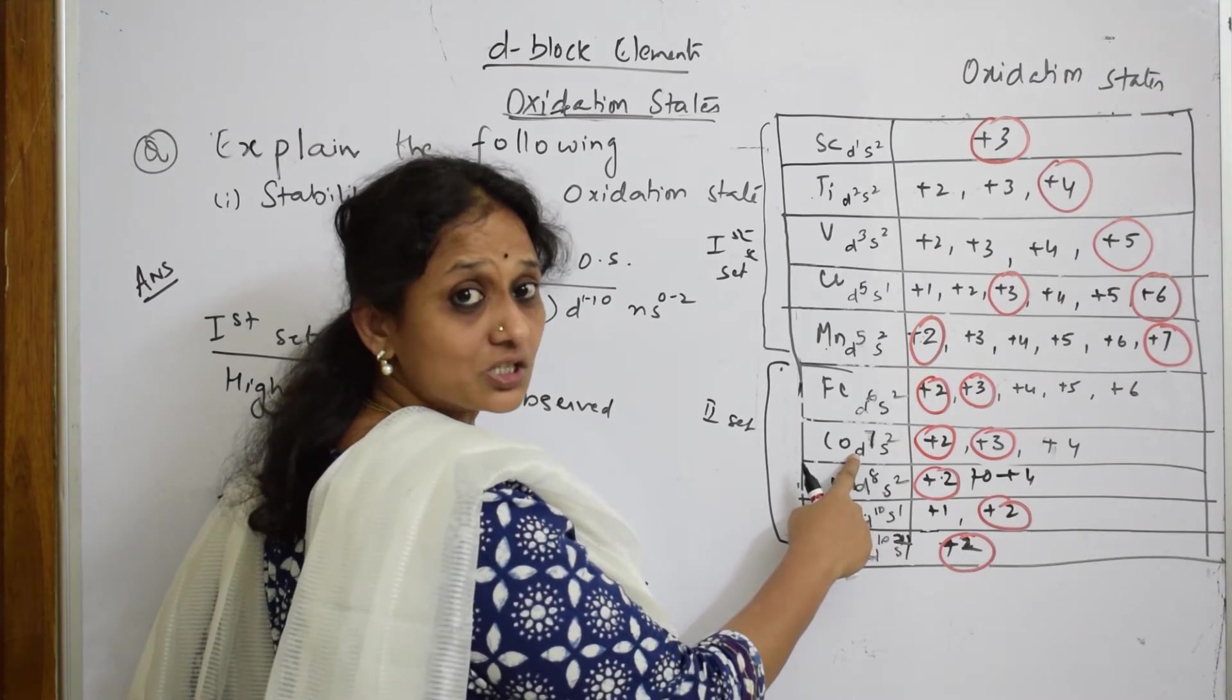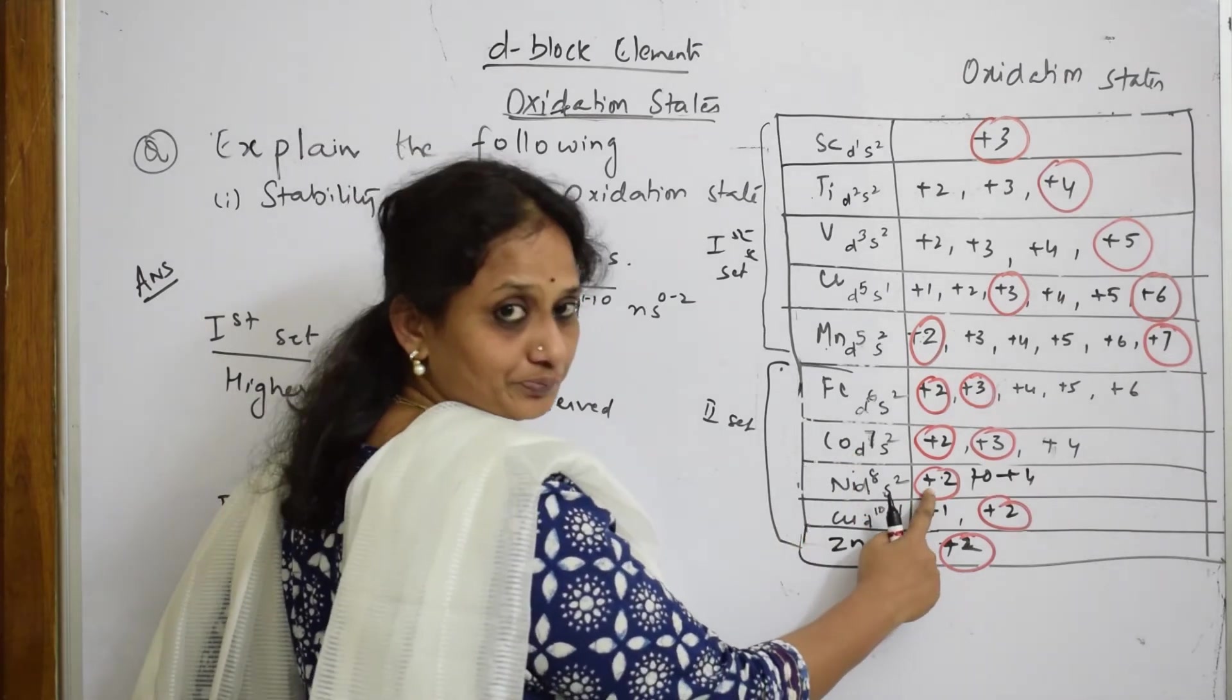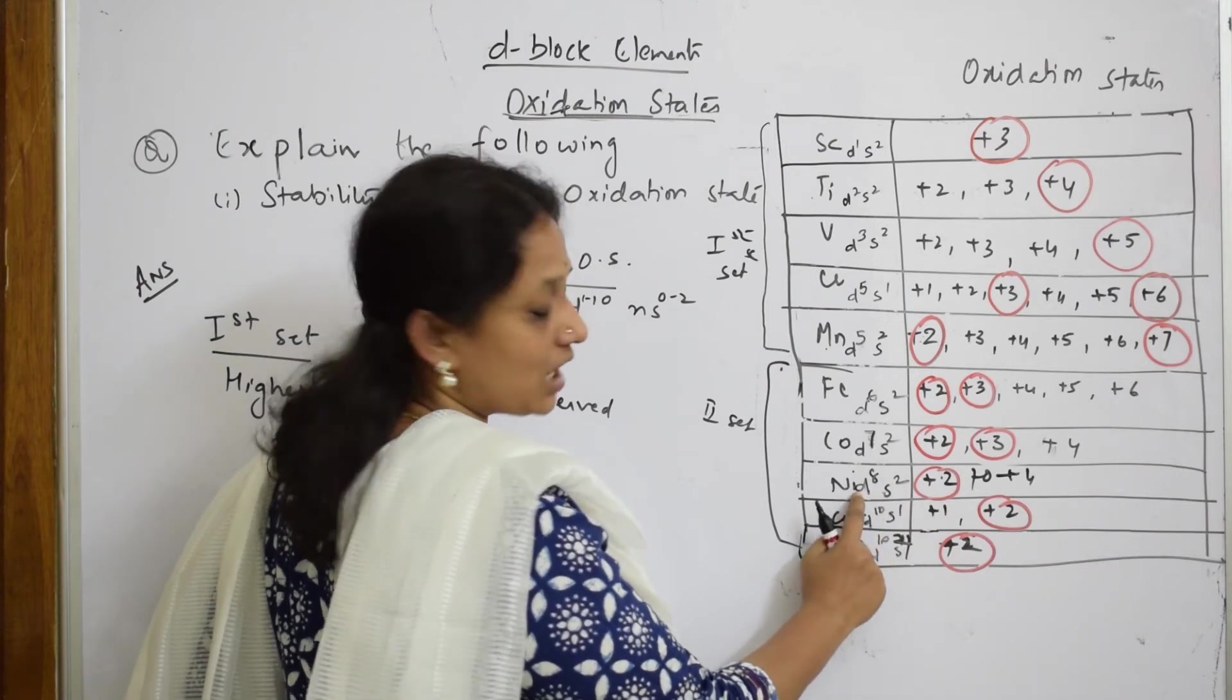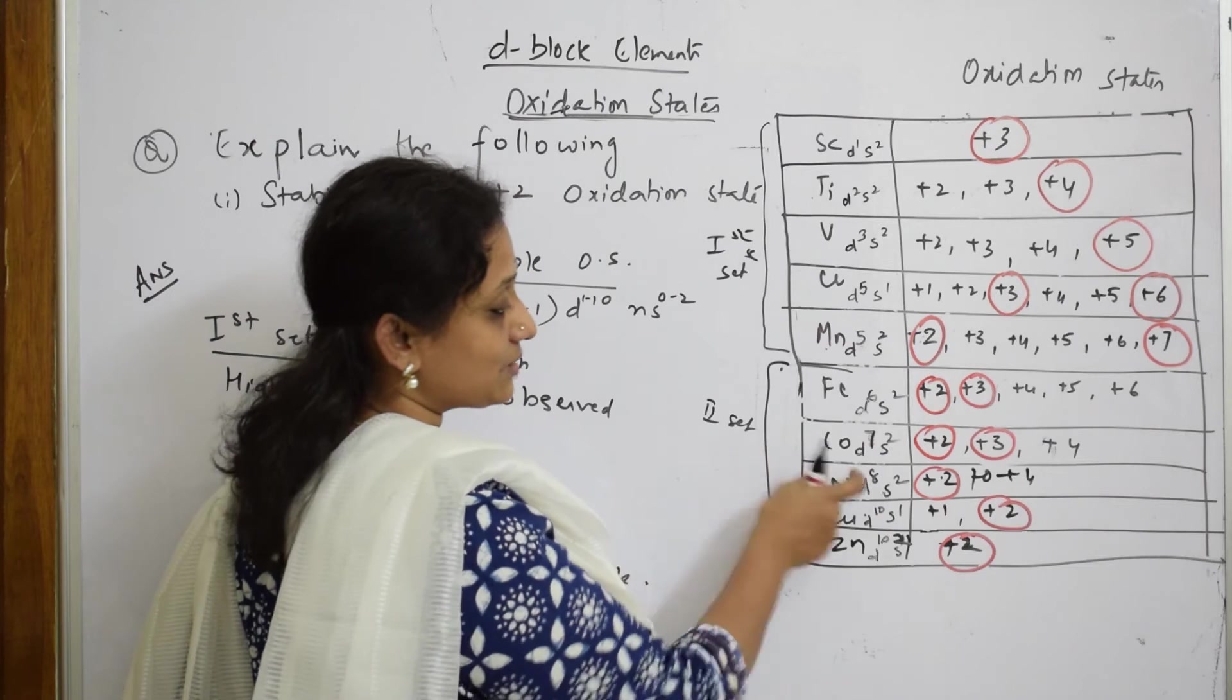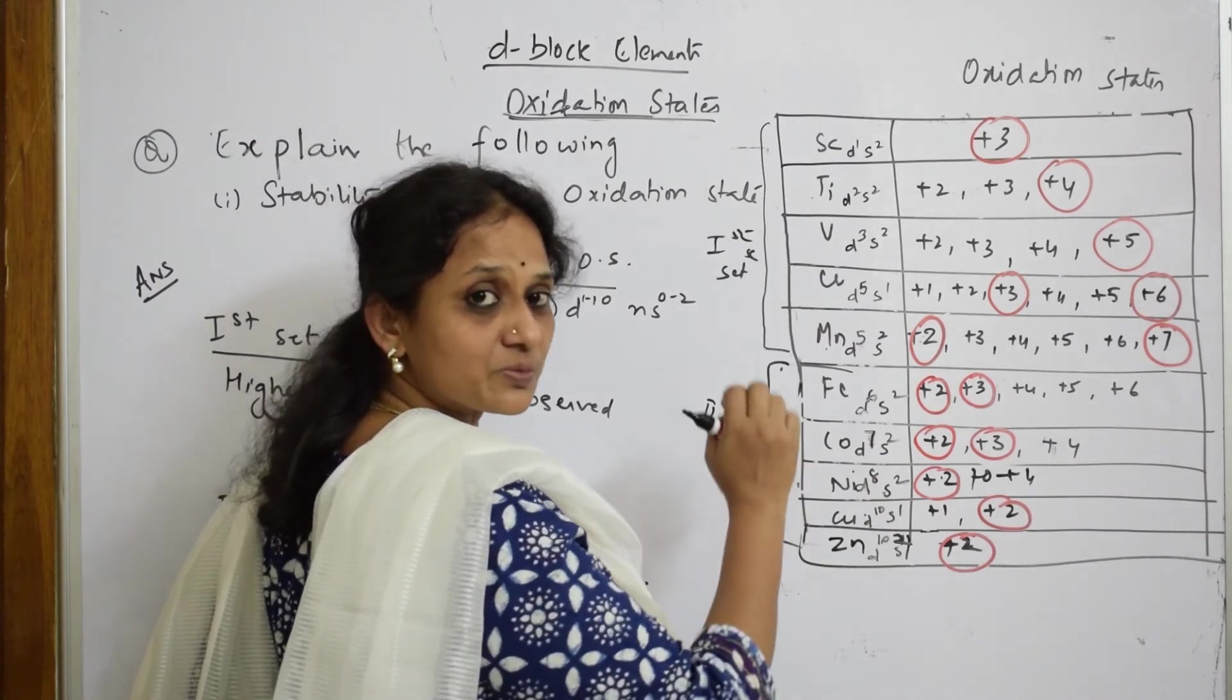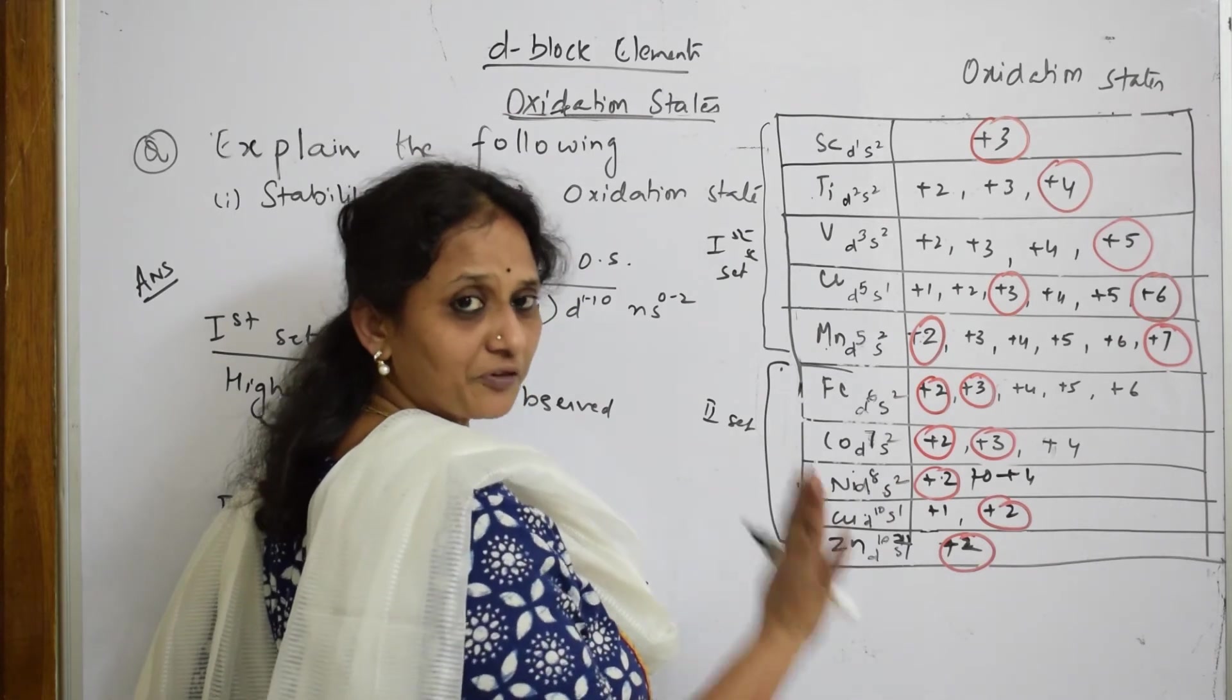Now let us come back and see for cobalt. Here again +2, this becomes 3d7. It becomes difficult for me, I have to apply extra energy ionization enthalpy to pull this electron because it is closer to the nucleus. Let us come back to nickel.